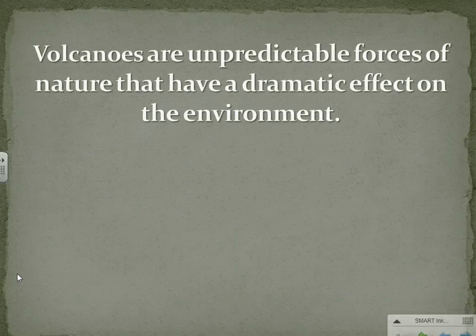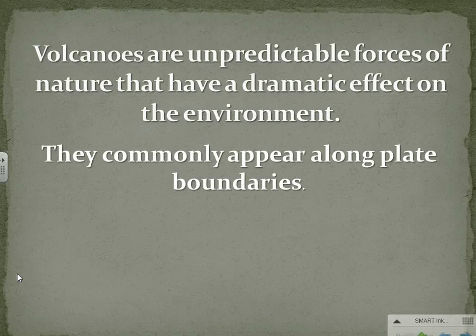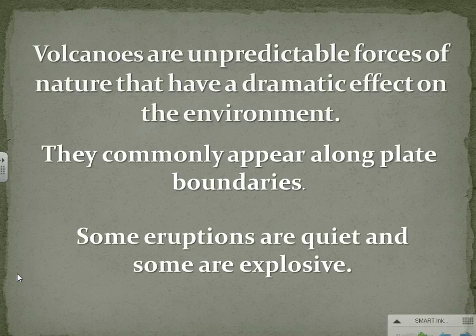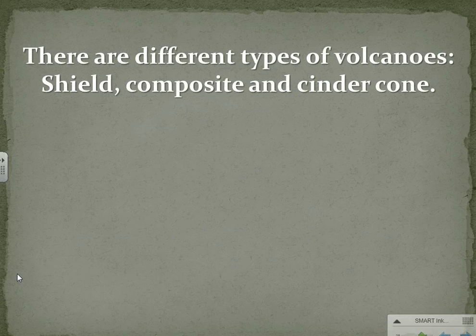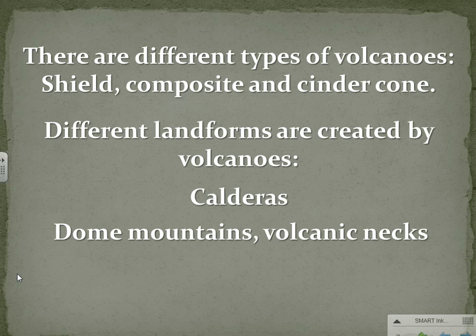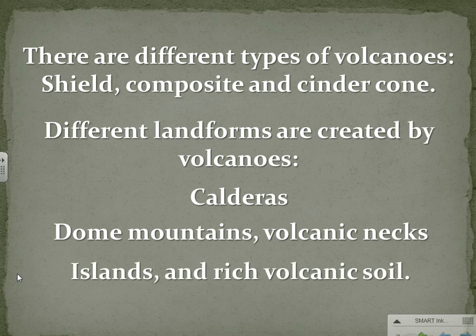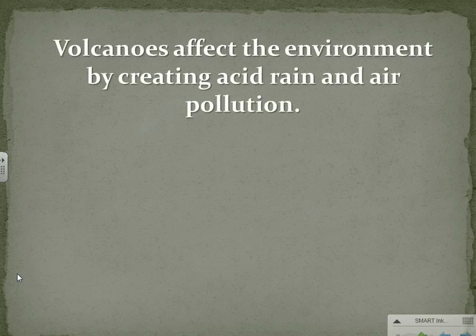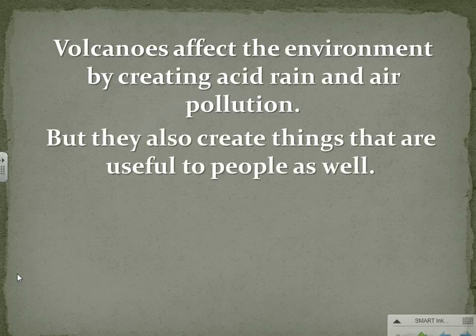Volcanoes are unpredictable forces of nature that have a dramatic effect on the environment. They commonly appear along plate boundaries. Some eruptions are quiet and some are explosive. There are different types of volcanoes: shield, composite, and cinder cone. Different landforms are created by volcanoes — calderas, dome mountains, volcanic necks, islands, and rich volcanic soil. Volcanoes affect the environment by creating acid rain and air pollution, but they also create things that are useful to people as well.